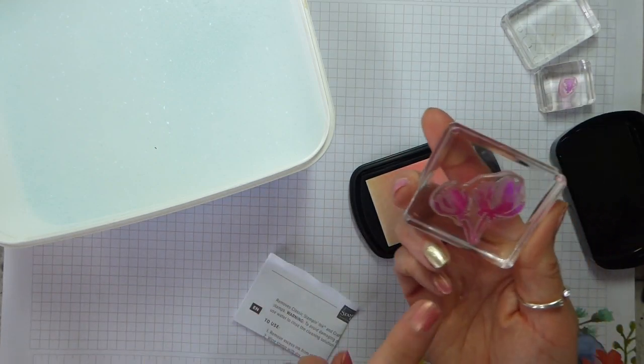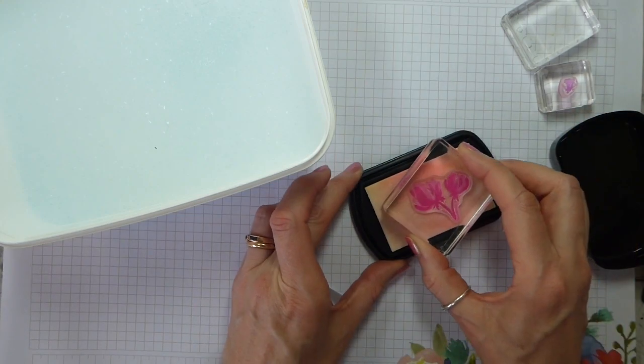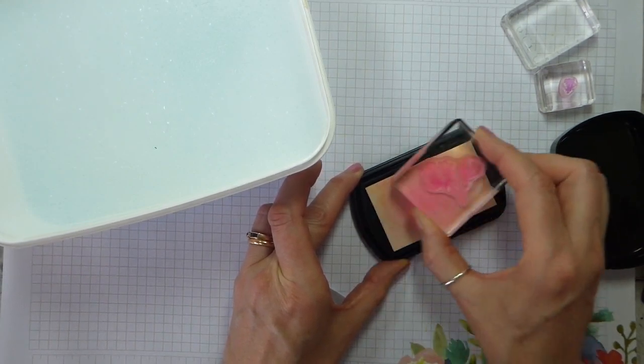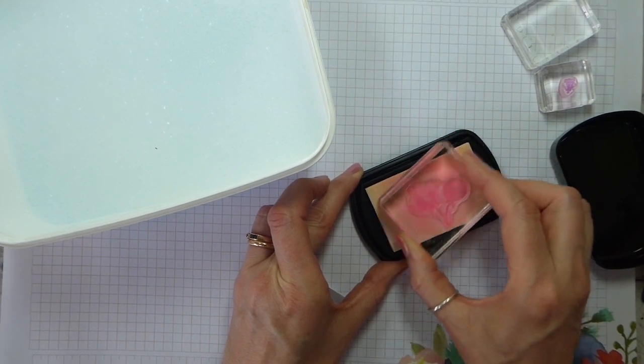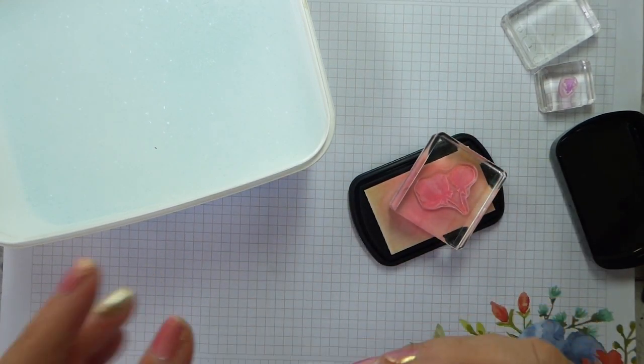So I've got this stamp from the beautiful Friendship stamp set. And I'm going to rub it on this pad. And you just gently rub it. Now there is an instruction sheet. It's not long, but I have kept it.